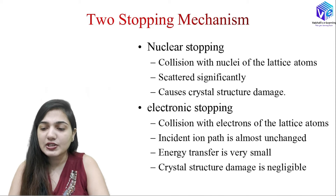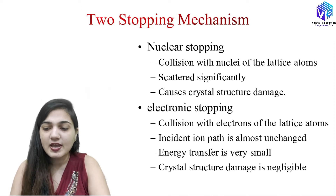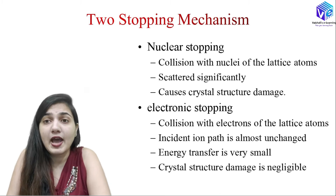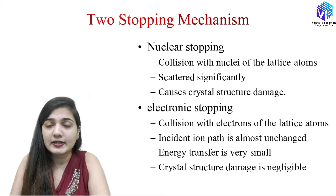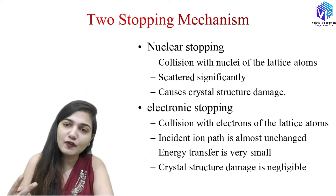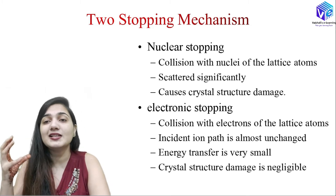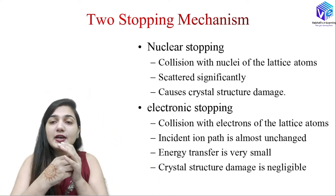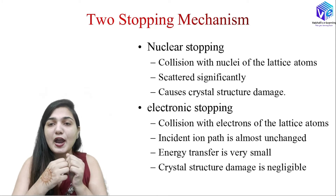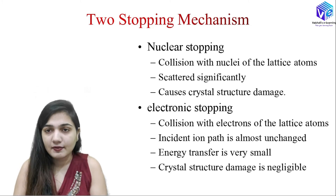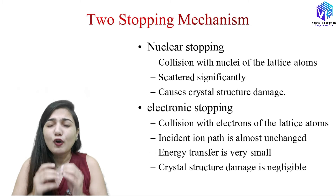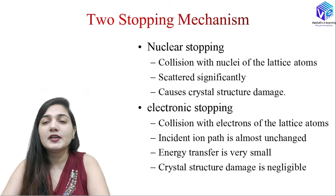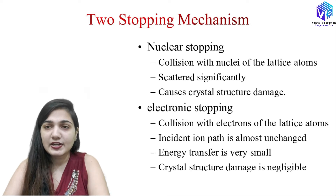In nuclear stopping, we have collision with the nuclei of the lattice atoms. The nucleus carries most of the mass of the atom — all the neutrons and all the protons. So when a high energy ion hits the nucleus, a lot of momentum is generated, resulting in high scattering after the collision. There will be a large change in the direction of the ion and it will cause significant crystal damage.